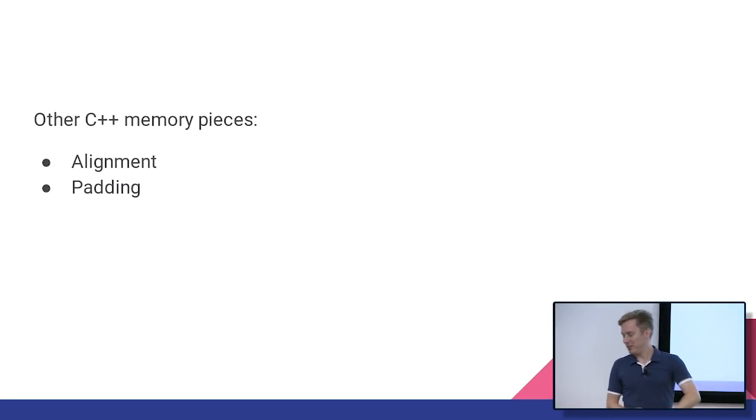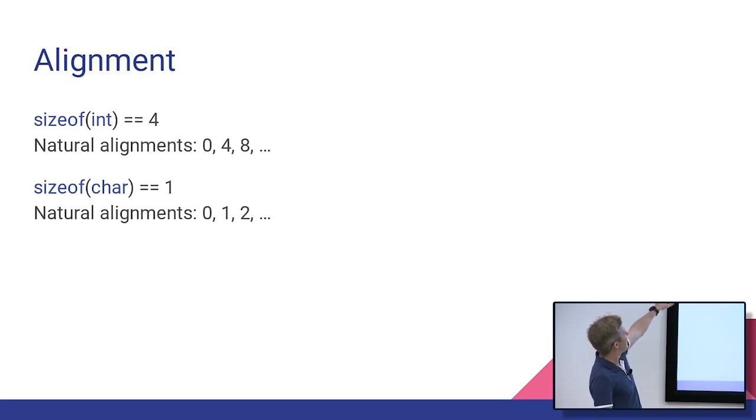OK. How am I doing on time? Woo! Alignment and padding. So we have an integer. The size of the integer is 4 in the example I used. Natural alignments are going to be multiples of 4. 0, 4, 8, yada, yada. We have a char. It's size 1. Natural alignments are multiples of 1. 0, 1, 2, easy. It doesn't have to be this way, but this is really common.